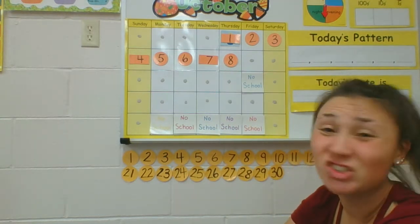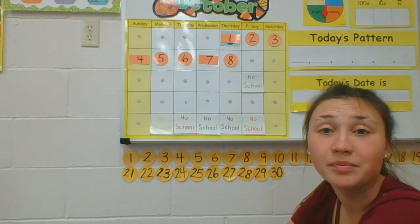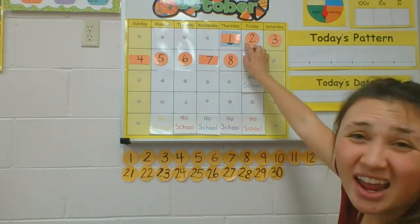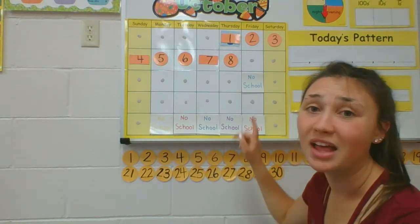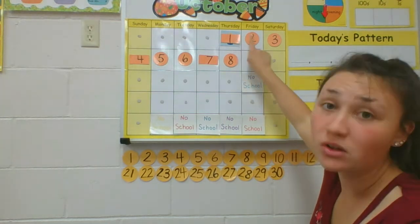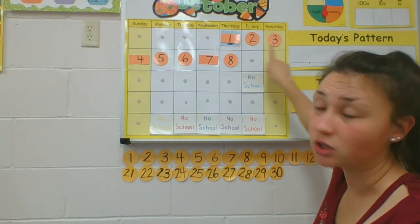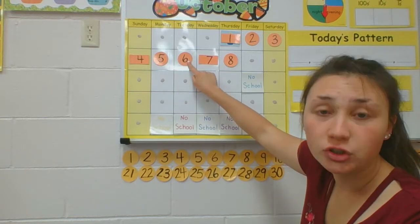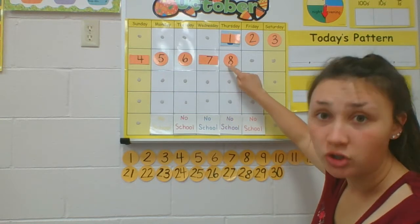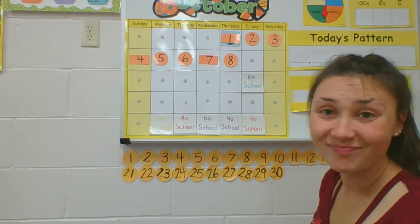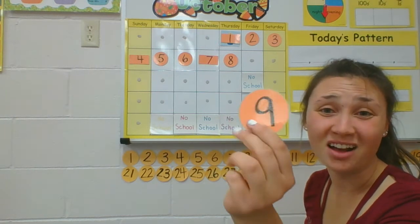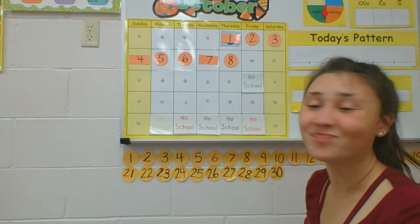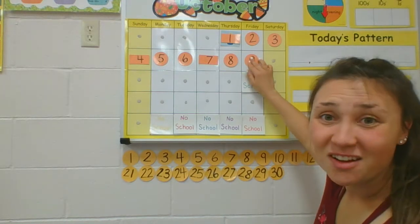So what shape is today going to be? Let's say all the shapes we have so far, just to practice our shapes and patterns. Rectangle, circle, circle, rectangle, circle, circle, rectangle, circle. What comes after the first circle? Another circle — circle number nine. That is Friday.